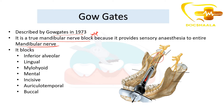The technique blocks the following branches of the mandibular nerve: inferior alveolar, lingual, mylohyoid, mental, incisive, auriculotemporal, and buccal. So injection at the site of the mandibular nerve will block all these branches.